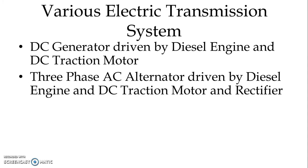The second system is a three-phase AC alternator driven by diesel engine and a DC traction motor with a rectifier. The required motive power is generated again by the DC traction motor. We use a three-phase AC alternator driven by the diesel engine and a rectifier to convert three-phase AC power into DC power to match with the DC traction motor.